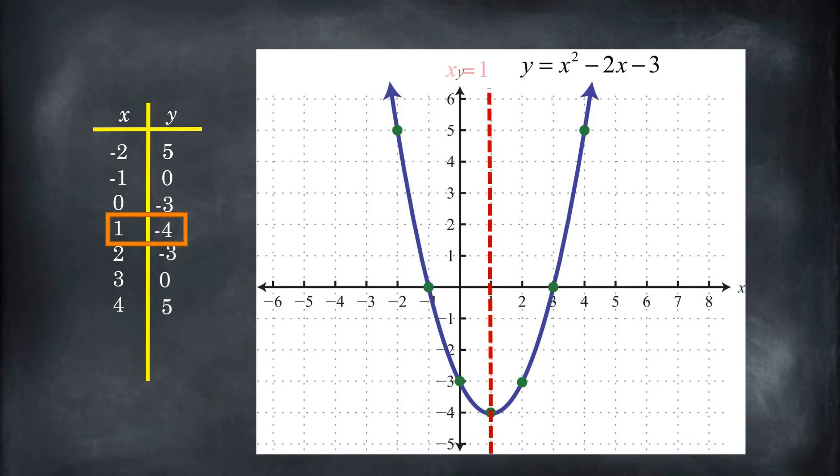And so what ends up happening is if you have two points on your parabola that are collinear on a horizontal line like these two, 4, 5, and negative 2, 5, these two points are going to be the exact same distance from that line of symmetry. So the distance between negative 2, 5 and the line of symmetry is the same exact distance as it is from 4, 5 to that line of symmetry. And that's true for any points you pick anywhere on the parabola.